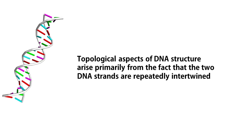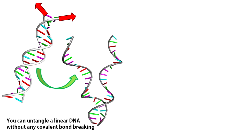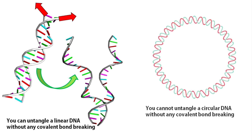Topological aspects of DNA structure arise primarily from the fact that the two DNA strands are repeatedly intervened. Let us think about how to untangle these two strands. Consider a simple case of a linear DNA in solution — you can untangle the two strands just by pulling them in two different directions. No covalent bonds are breaking. But if you consider a circular DNA, the scenario is entirely different.